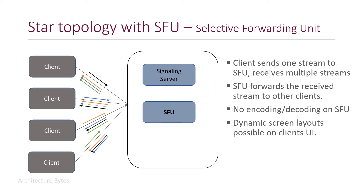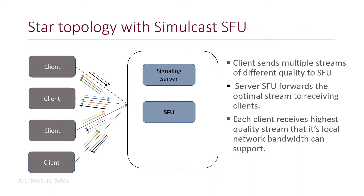Dynamic screen layouts are possible on the client's UI because it receives multiple streams. A variation of SFU is called simulcast SFU. Here each client sends multiple streams of different quality to the SFU. The SFU forwards a stream of appropriate quality to the receiving client depending on the network bandwidth it can support, so each client receives the highest quality stream it can handle.